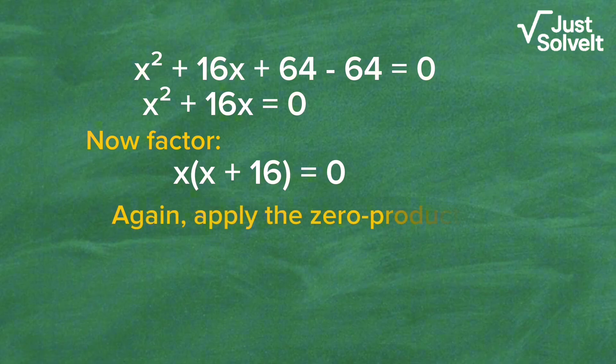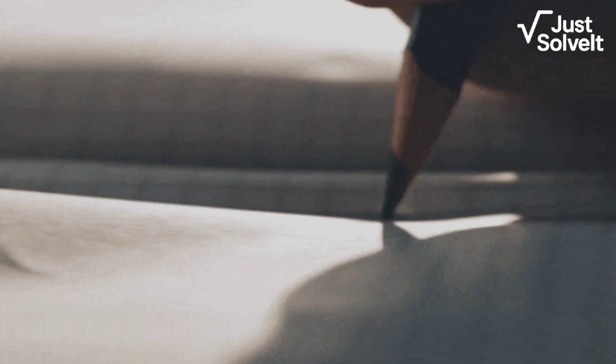Now factor: x(x + 16) equals 0. Again, apply the zero product rule. x equals 0 or x equals negative 16. Same answers, just a different method.